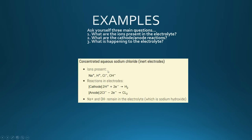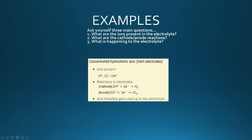For concentrated aqueous sodium chloride, the ions present are the four we discussed. You get hydrogen being formed at the cathode, and at the anode you get chlorine being formed instead of oxygen because it's a concentrated solution, leaving sodium and hydroxide ions in the electrolyte, which makes sodium hydroxide. For concentrated hydrochloric acid, the ions present are three: at the cathode you form hydrogen, and at the anode you form chlorine again because this is a concentrated solution.